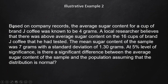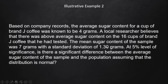Moving on to the next illustrative example. Based on company records, the average sugar content for a cup of Brand J coffee was 4 grams — that is the population mean. A local researcher believes there was above average sugar content in the 16 cups of Brand J coffee he tested. The sample mean sugar content was 7 grams, and the standard deviation of the 16 cups is 1.30 — that is the sample standard deviation.